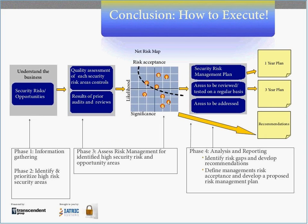In summary, you've seen this diagram already earlier in the presentation. It outlines the four phases of the security assessment. Phase one is understanding the business, which entails gathering information about the environment, while phase two is the identification and prioritization of high security risk areas.